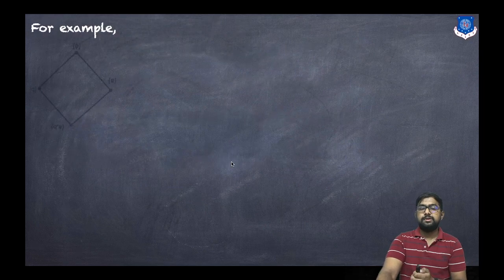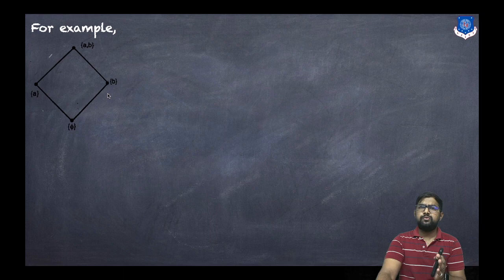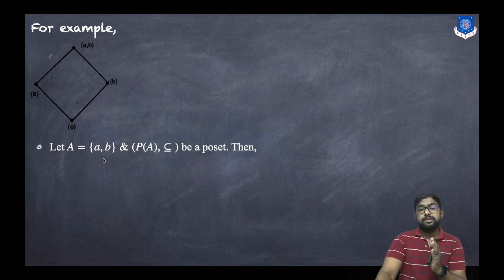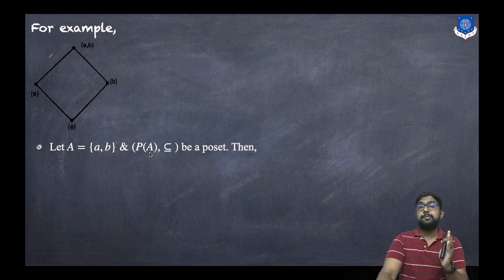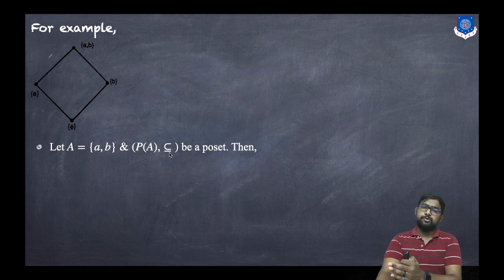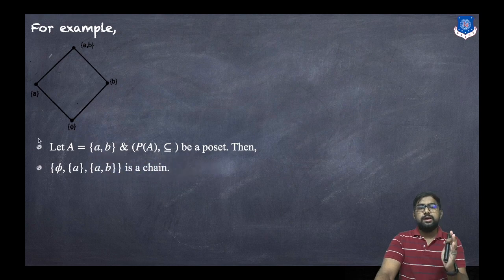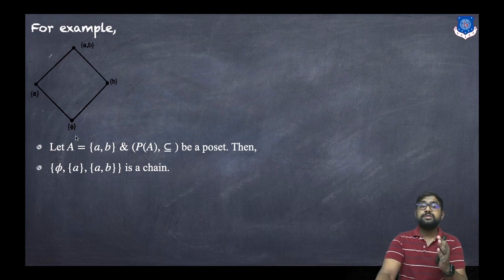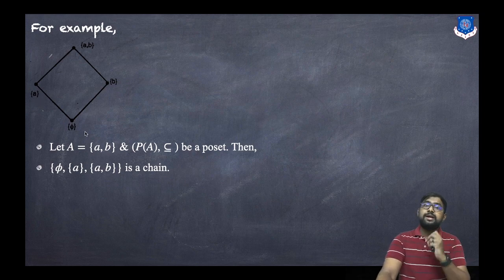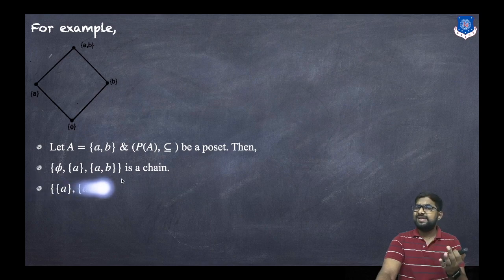For example, consider this Hasse diagram. Let capital A = {a, b}, and the poset is given as P(A) — the power set of {a, b} — under the subset relation. Now consider φ, {a}, and {a,b}: they form a chain because φ ⊆ {a} and {a} ⊆ {a,b}, so all elements are related.